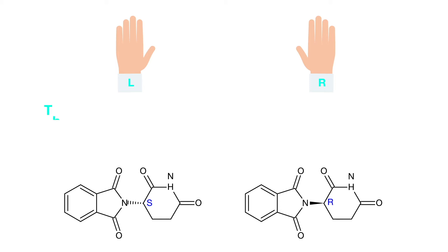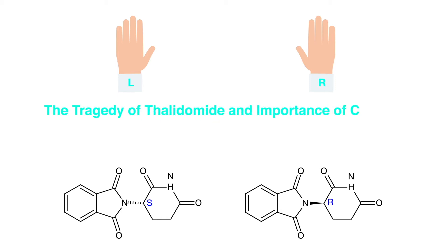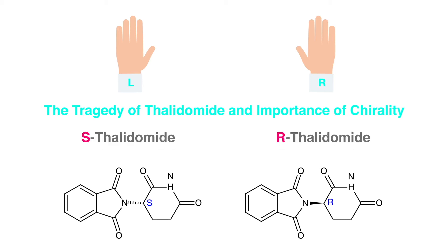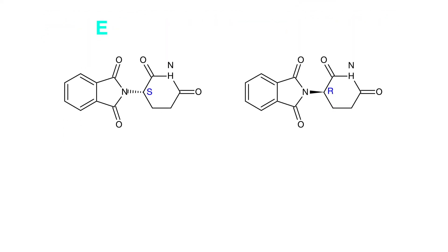However, unbeknownst to the industry, the S enantiomer resulted in thousands of birth defects and became a notorious example of how chiral compounds and their interactions could have potentially unforeseen consequences.